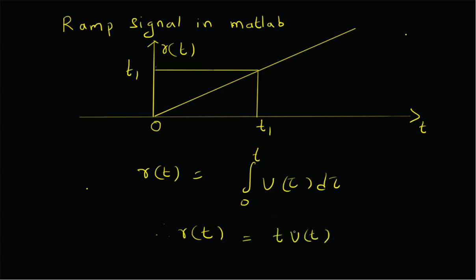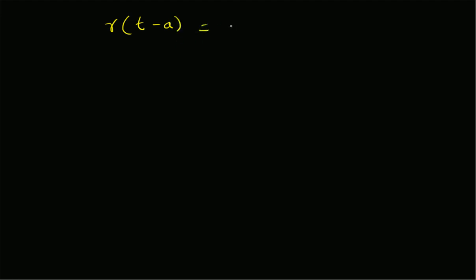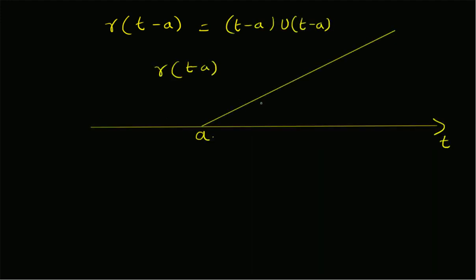This integral basically becomes t times u(t). Now let us see what happens when there is a delay or advance in the ramp signal — that is, shifting of the ramp signal. r(t minus a) will simply be equal to (t minus a) times u(t minus a). So the value of the signal at any point t1 will be equal to t1 minus a.